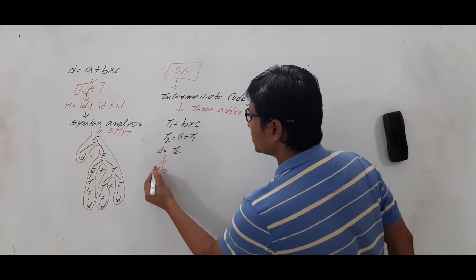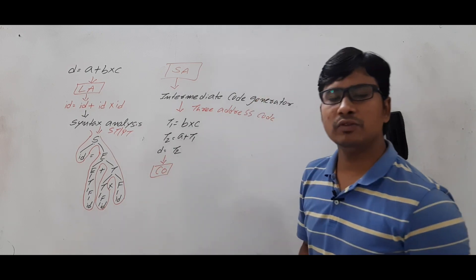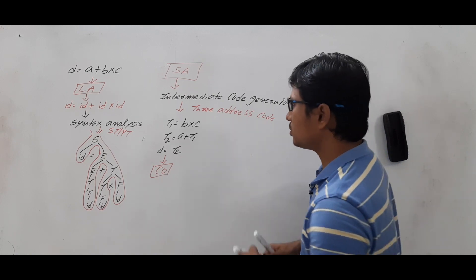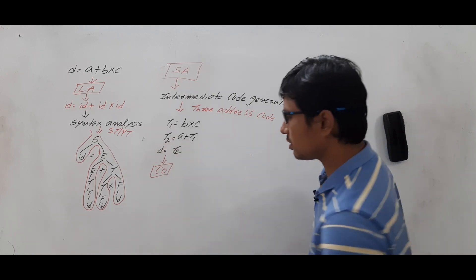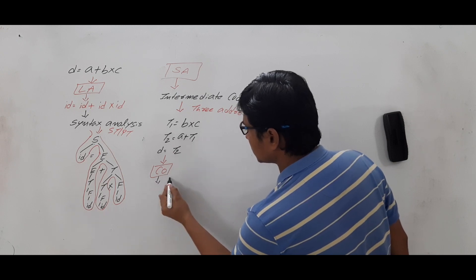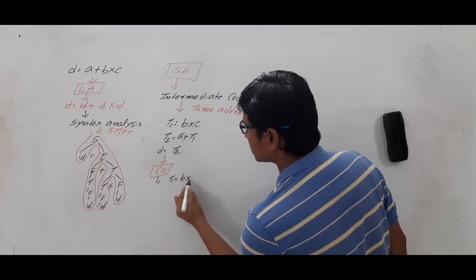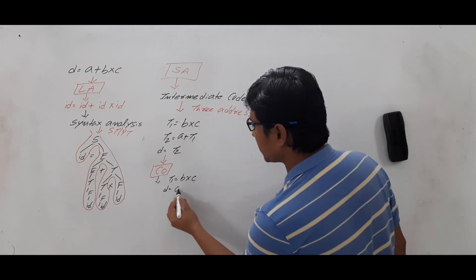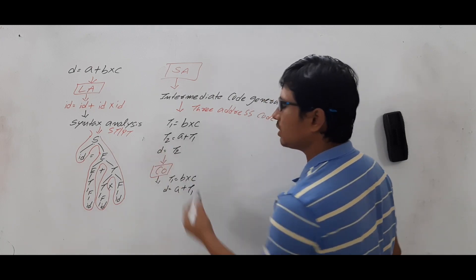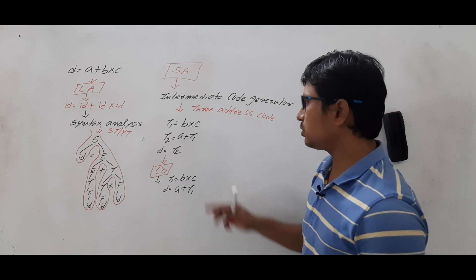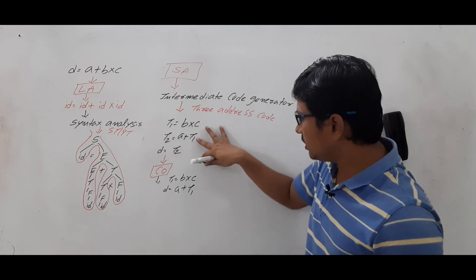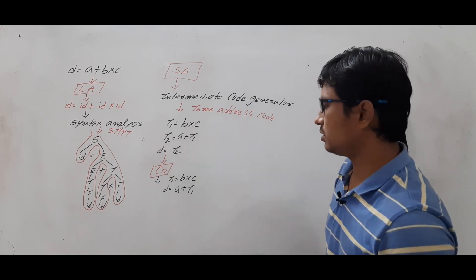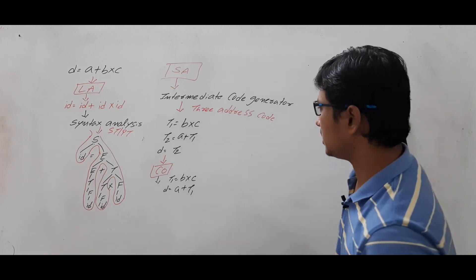If we give this to the code optimization phase, it will try to reduce the three-address code where possible. The optimized code is: t1 = B * C, then directly D = A + t1. The temporary variable t2 has been eliminated, so we have reduced from three three-address instructions to two. This is the code optimization.